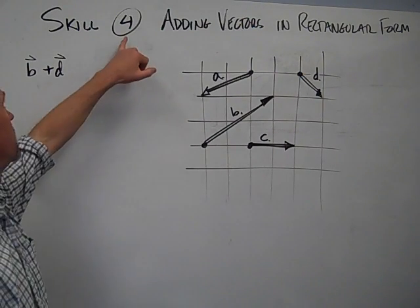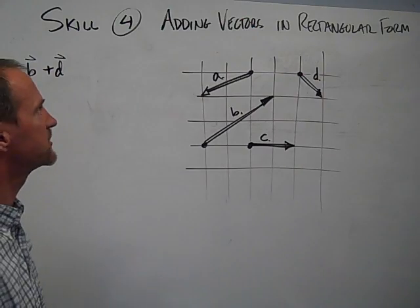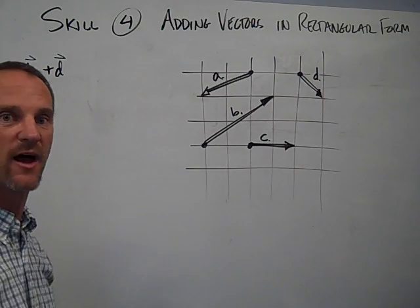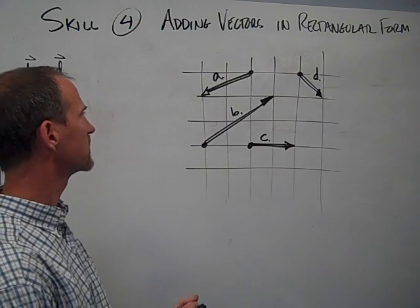Okay, we're up to skill number four, adding vectors that are in rectangular form. Now, rectangular form is the easy way to add vectors, so we're going to start right here.